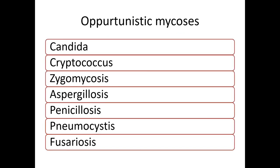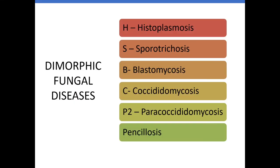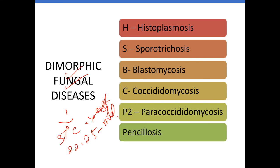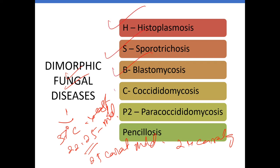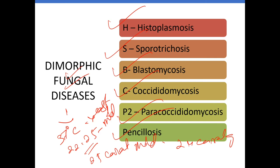Opportunistic mycoses include Candida, Cryptococcus, Zygomycetes, Aspergillosis, Penicillosis, Pneumocystis, and Fusarium. Dimorphic fungal diseases occur at 37°C as yeast and at 22–25°C as mold — remembered as '25 carat mold.' Diseases include Histoplasmosis, Sporotrichosis, Blastomycosis, Coccidioidomycosis, Paracoccidioidomycosis, and Penicillosis. The next class will cover superficial mycoses in detail.